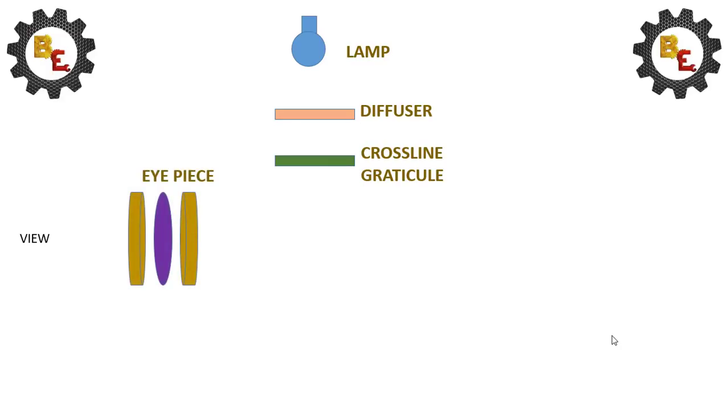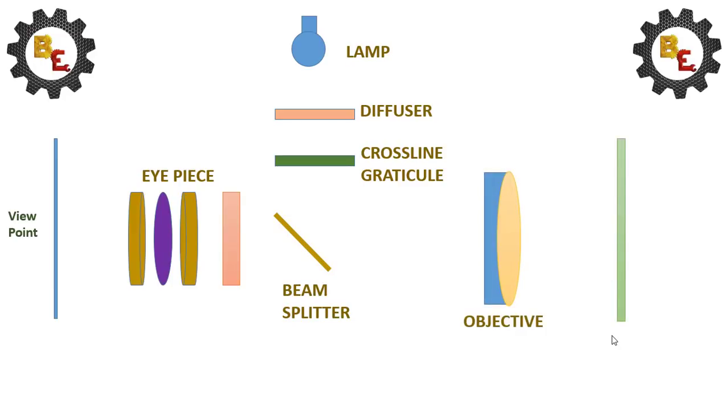An eyepiece, scale, beam splitter and objectives and reflector plane and viewpoint. These are the important components in autocollimator.